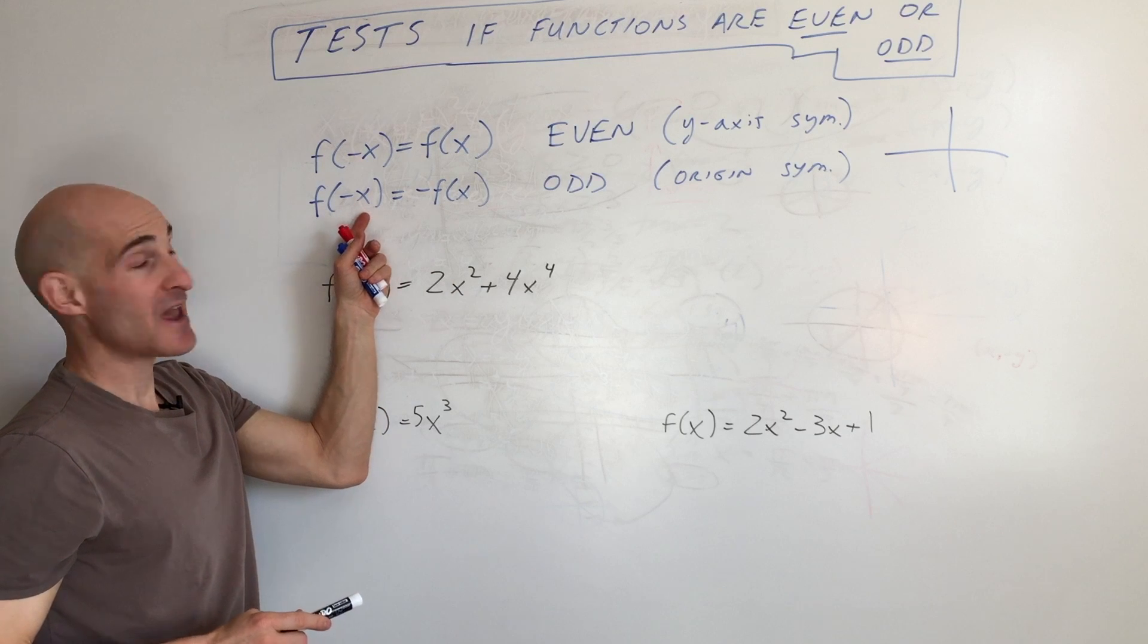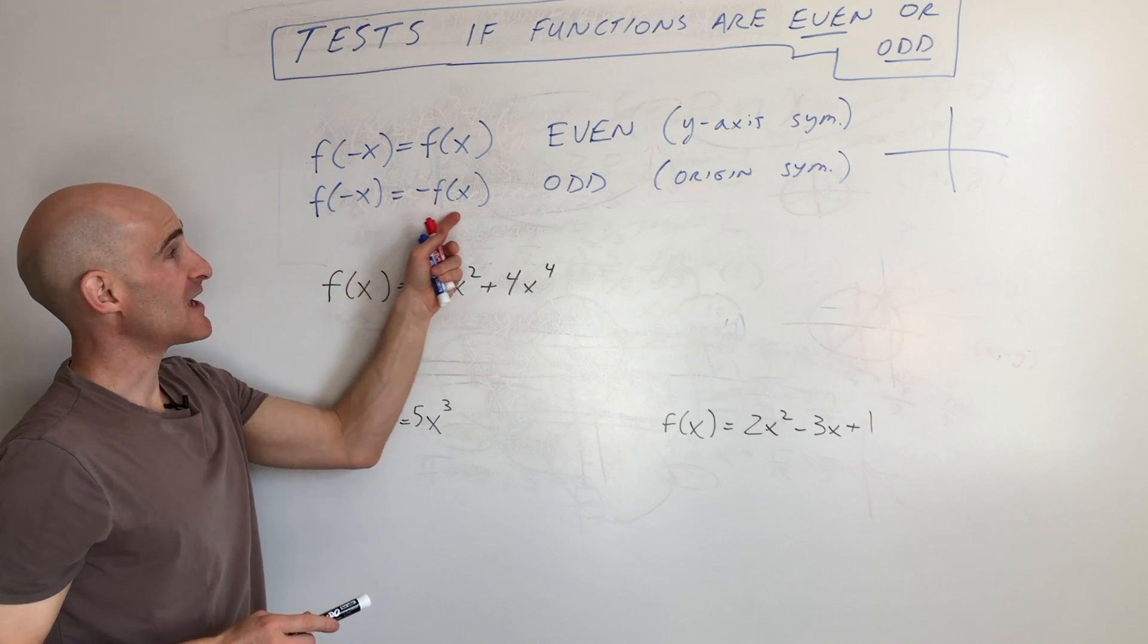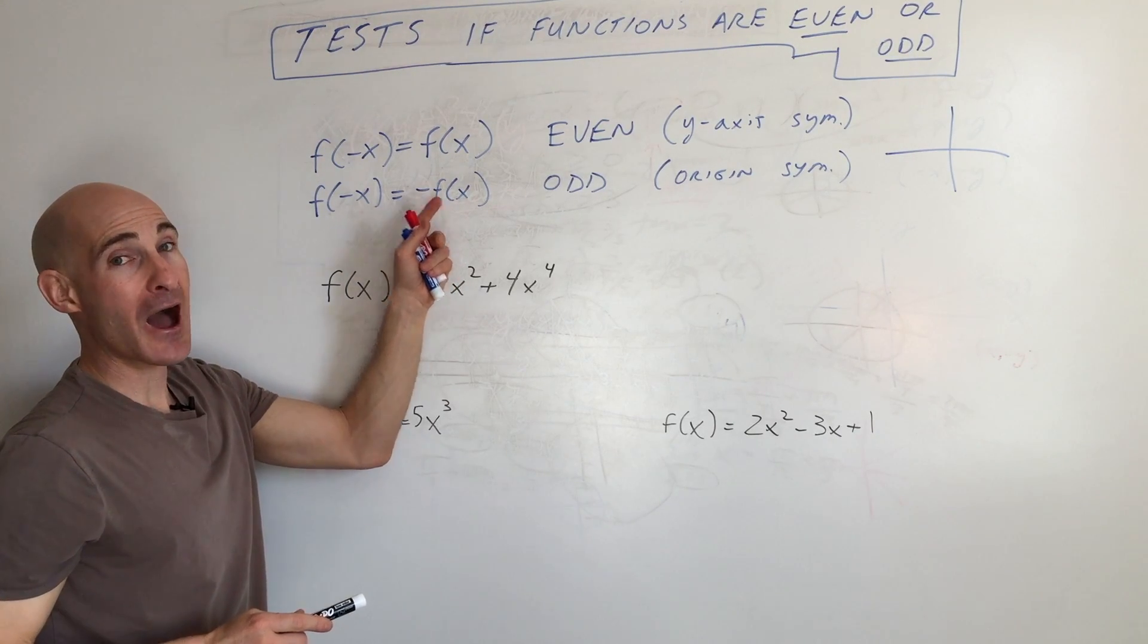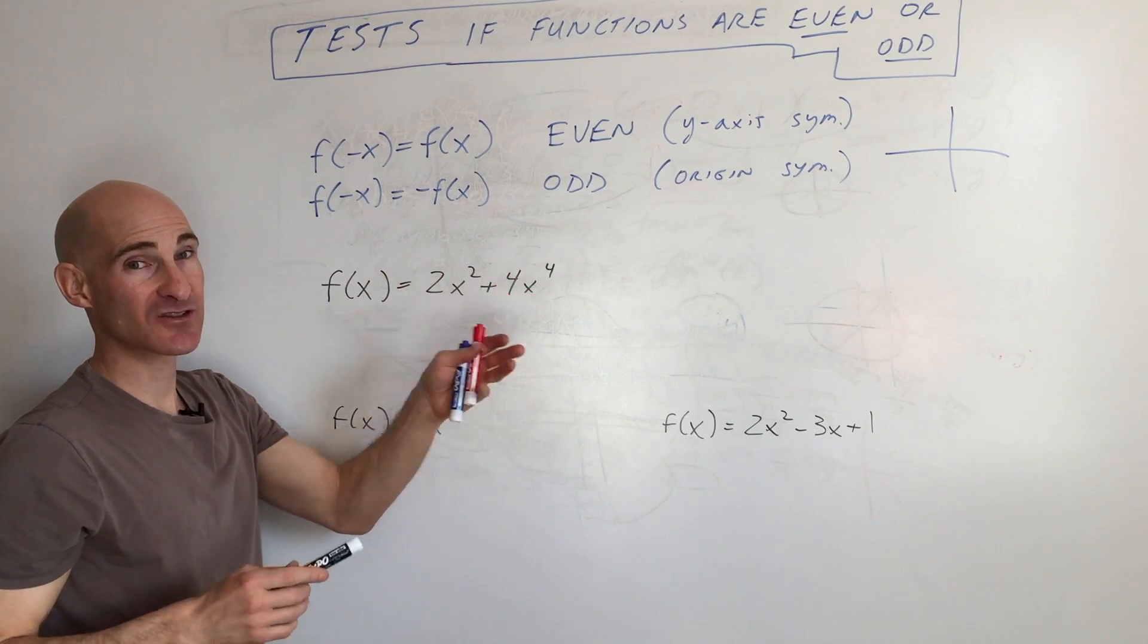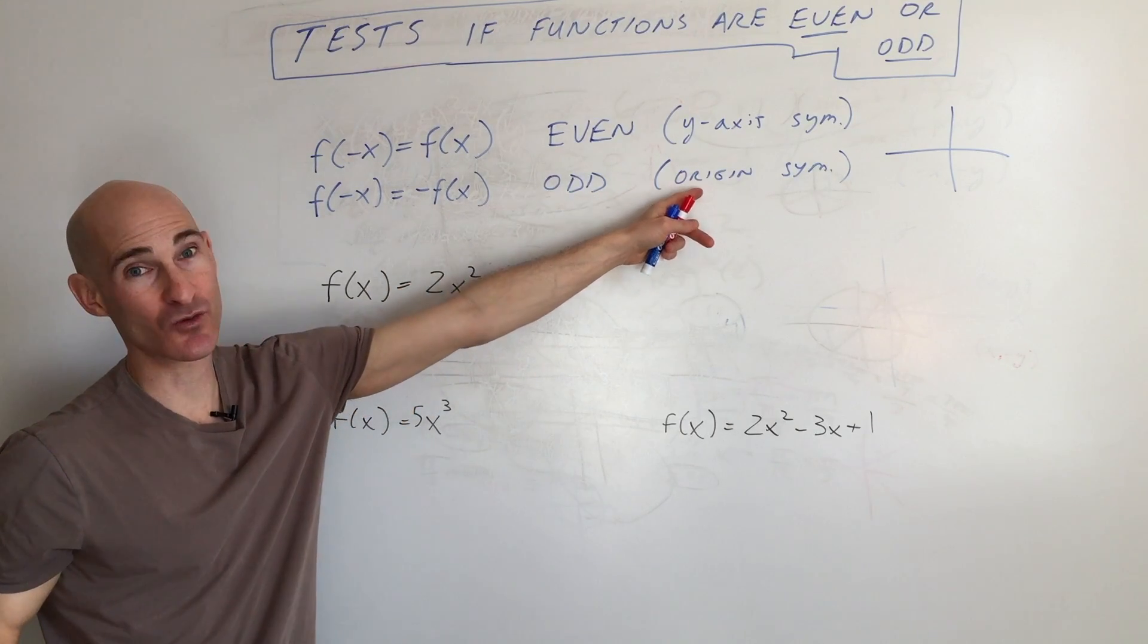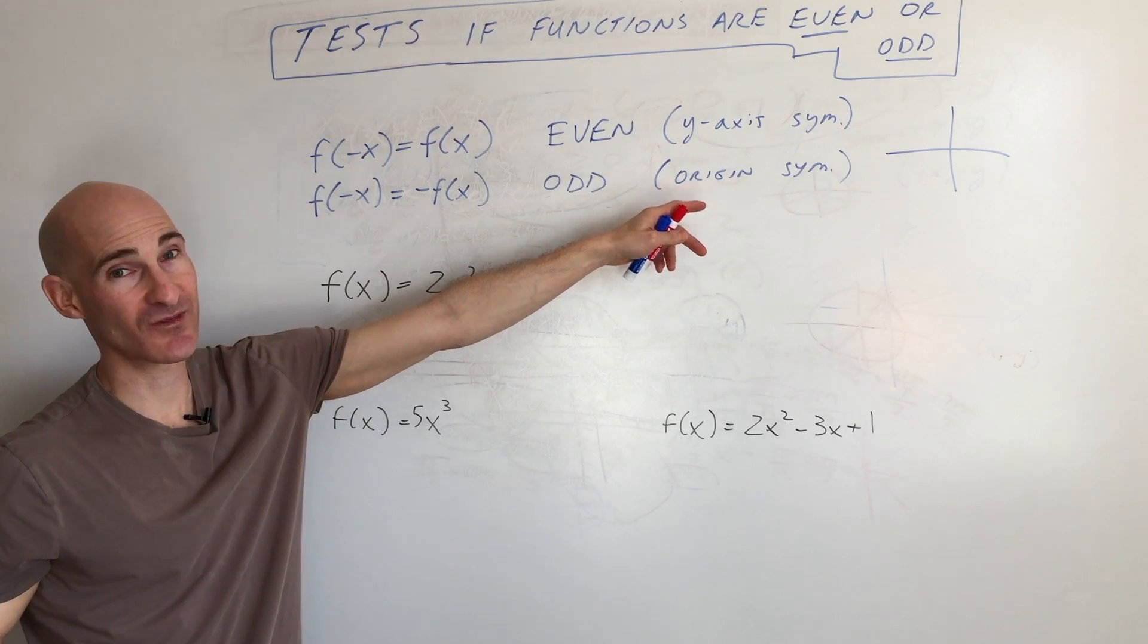If you replace x with negative x, and you get the same function back, the same terms, but all the signs are the opposite, if they're positive they're negative, they're negative they're positive, they're flipped, that tells you that it's odd, and that it is a rotation about the origin.